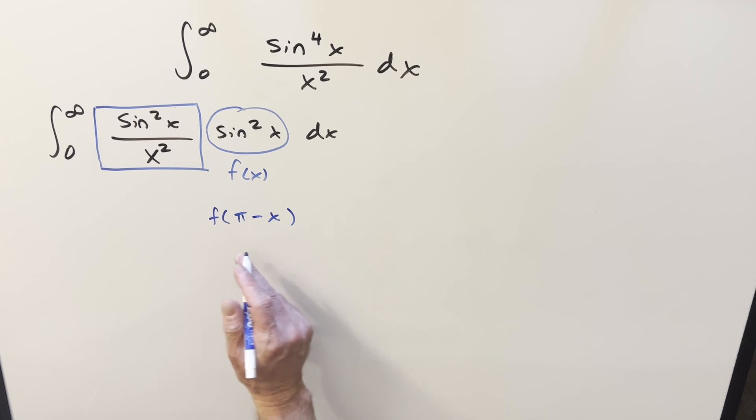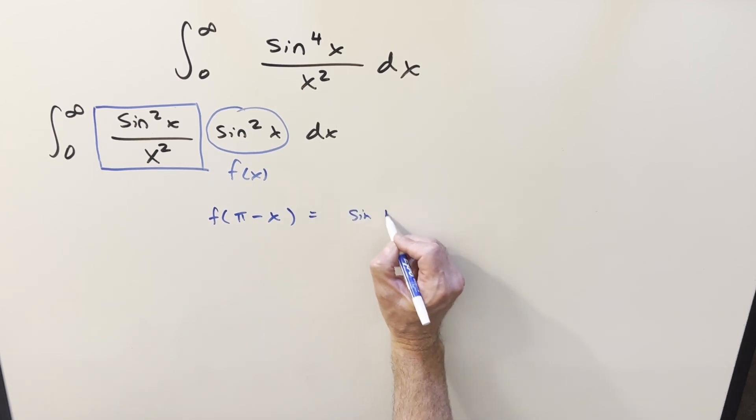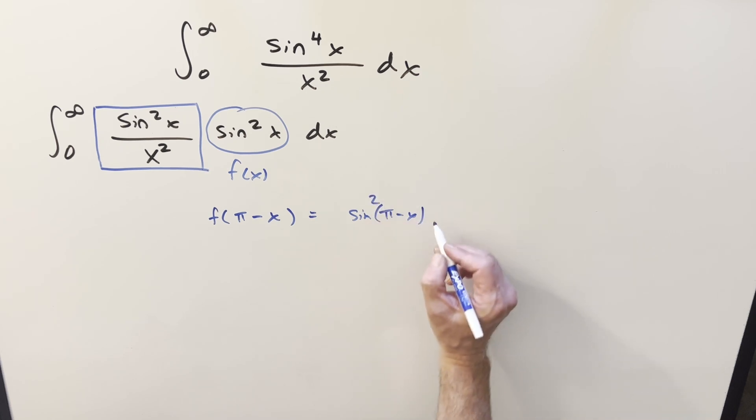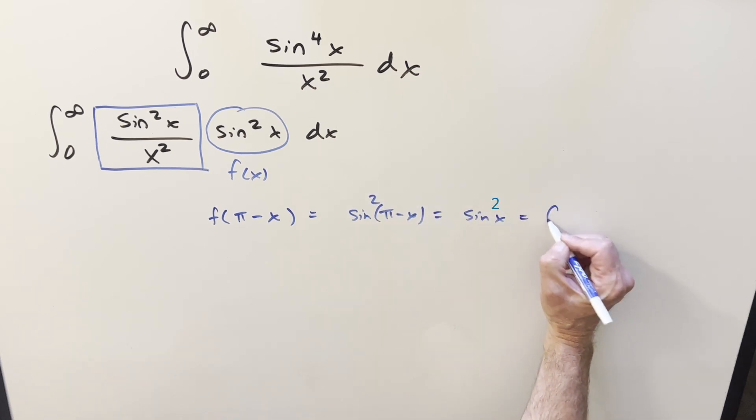That's pretty apparent just looking at it, but let's do the check to make it clear. So if we just look at f of pi minus x, well, sine pi minus x, that's just going to be sine x. So if we square that, we just get back sine squared x, and this is equal to f of x.